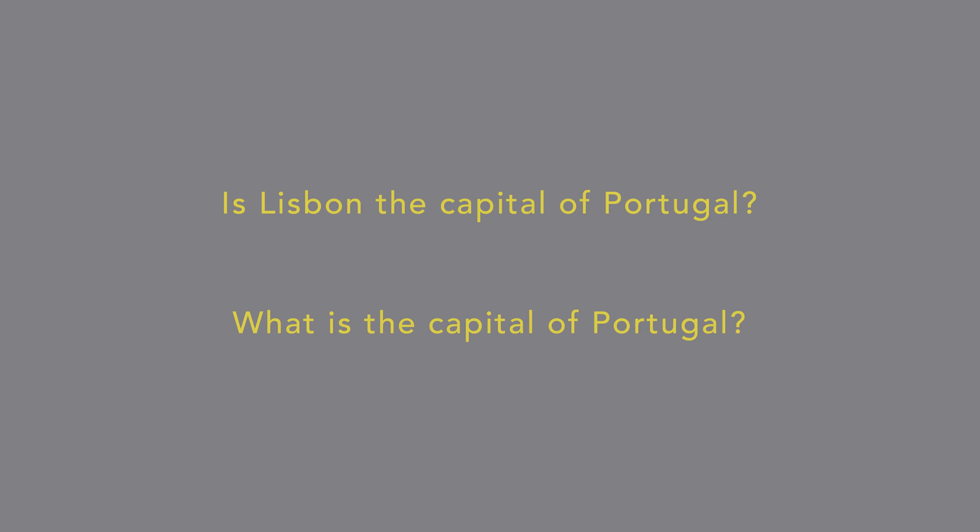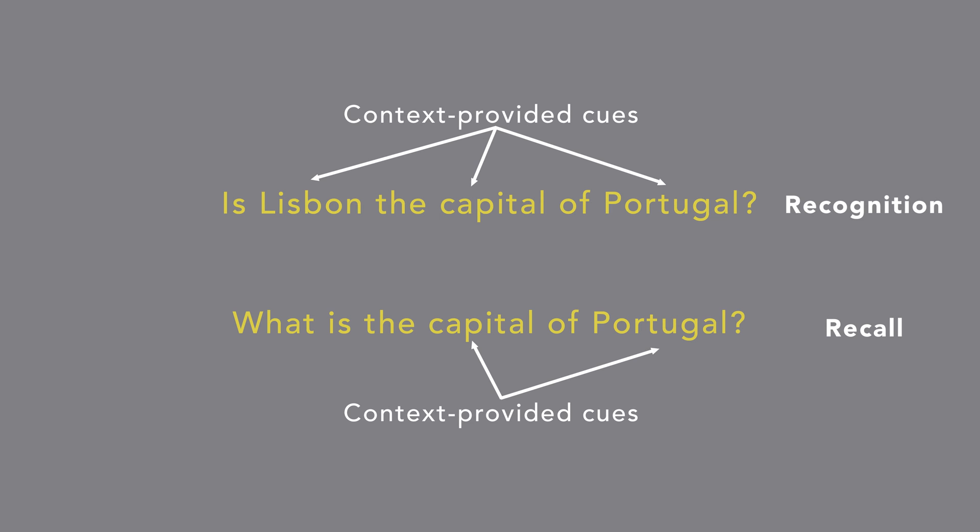Memory retrieval is made easier by the cues that we receive from the context. All those cues send signals to related information stored in our memory. The more cues we have, the easier it is to retrieve the right concept from memory. The big difference between recognition and recall is the number of cues provided by the context — recall involves fewer cues than recognition.